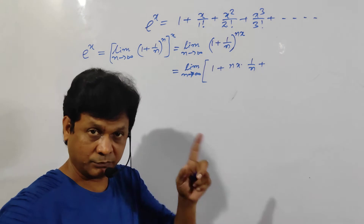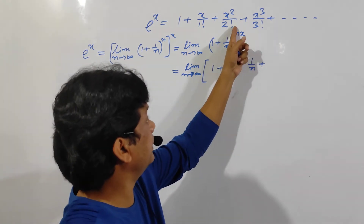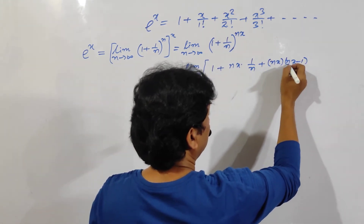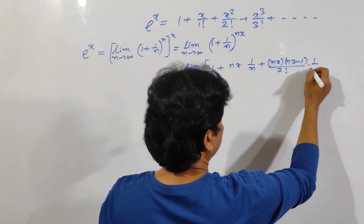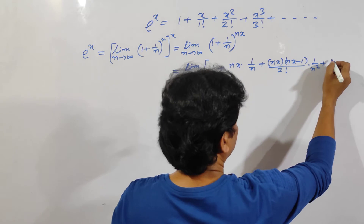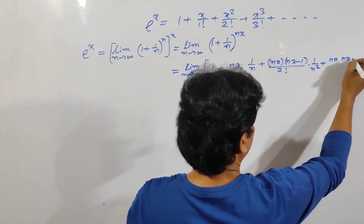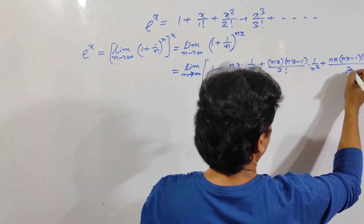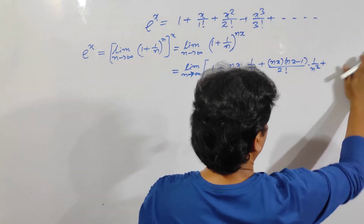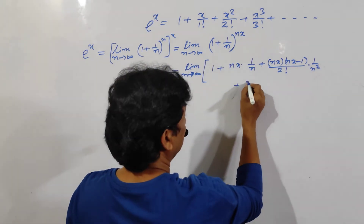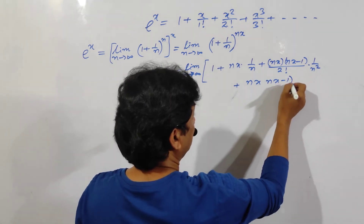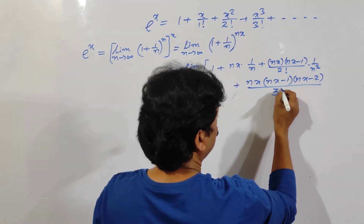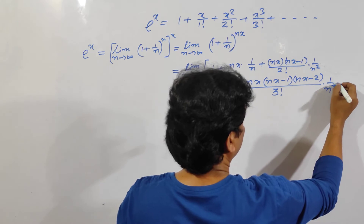nc1 in terms of n is written as nx. So plus nx into nx minus 1, divided by factorial 2 into 1 by n squared. Plus nx into nx minus 1 into nx minus 2, divided by factorial 3 into 1 by n cube, plus 1.